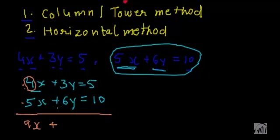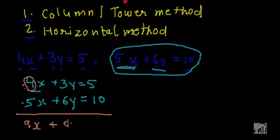Then the sum of 3y and 6y: again we add the coefficients, that is 3 plus 6, giving 9y. And on the right side, 5 plus 10 equals 15.